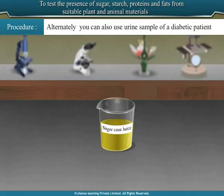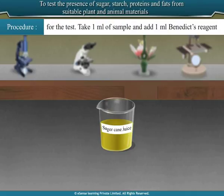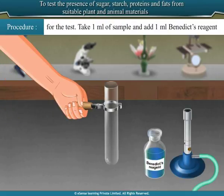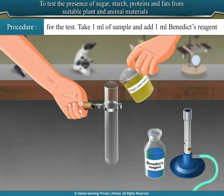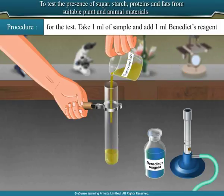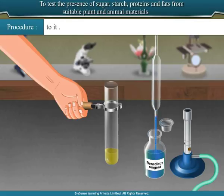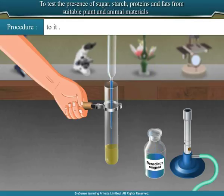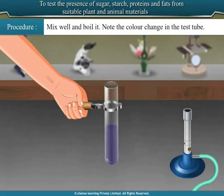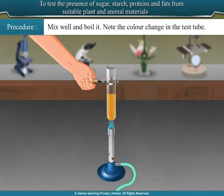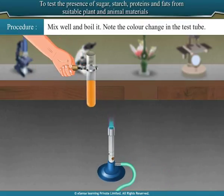Procedure: Take 1 ml of sugarcane juice for confirming the presence of sugar. Alternately, you can also use a urine sample of a diabetic patient for the test. Take 1 ml of sample and add 1 ml of Benedict's reagent to it. Mix well and boil it. Note the colour change in the test tube.